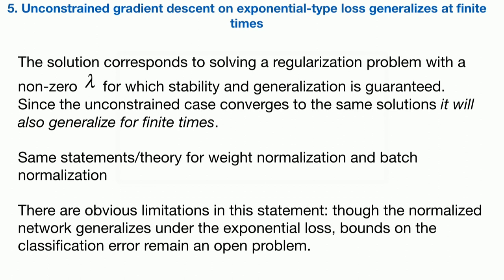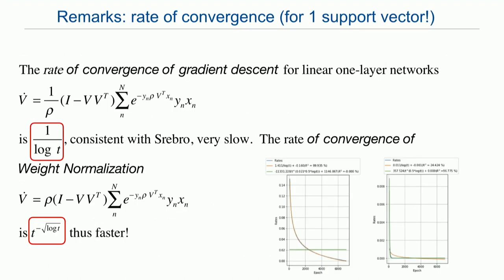And, of course, there are limitations in what I said because I cannot tell you about the classification error. There is a gap here. I can tell you about generalization in terms of the cross-entropy loss, but then if you have to say how good or bad the classification error is, I don't know how to do that. There is a gap. There is a bound, but in our case, it's so loose that it does not say much. Yeah, I know that the exponential loss is an upper bound of the classification error, but it does not give us much. Anyway, this is work to be done.